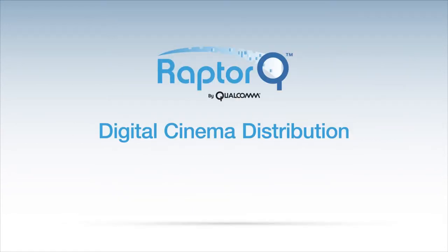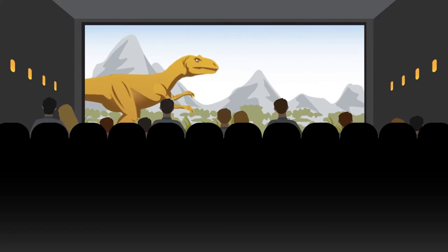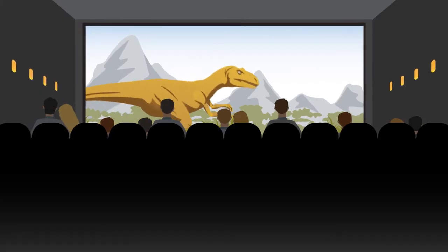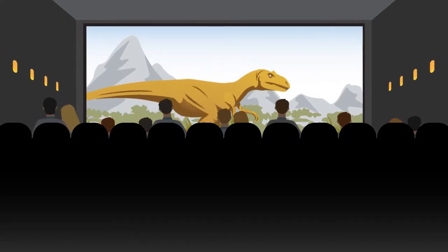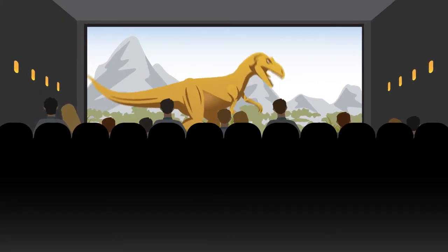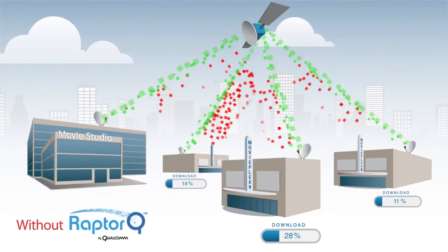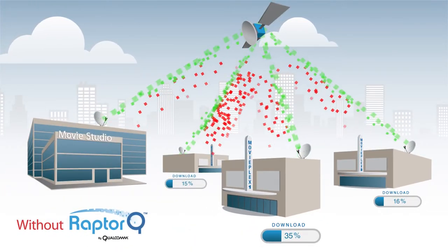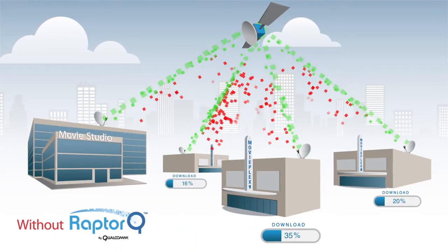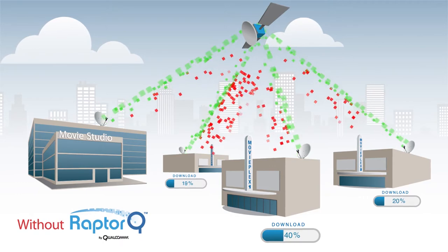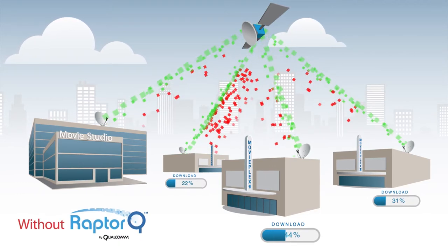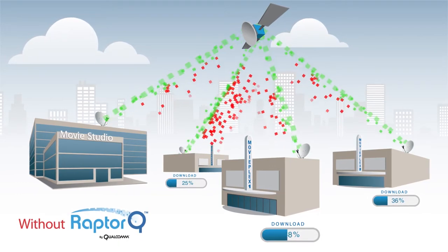File delivery applications can take advantage of RaptorQ as well. Distributing digital cinema movies over satellite takes a long time and is expensive, since data must be sent repeatedly until the weakest connection completes its transfer.